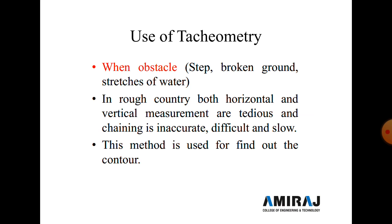The next point is the use of tacheometry. We use tacheometry when obstacles like steps, broken ground, or a stretch of water are present. In rough country, both horizontal and vertical distance measurements are tedious, and chaining is inaccurate, difficult, and slow. At that time we use the tacheometric survey for finding out the horizontal as well as vertical distance.